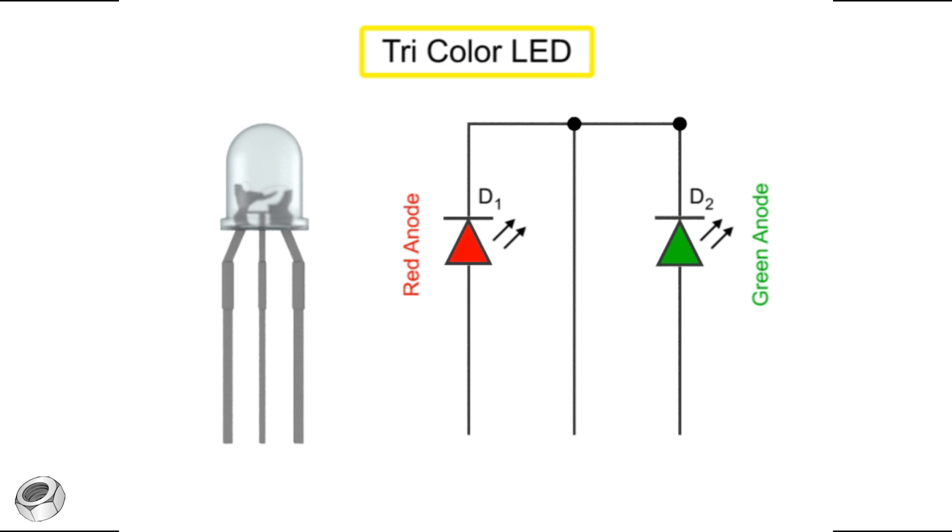In the three terminal LED, the LEDs share a grounding cathode. Like the bicolor LED, a positive voltage connected to an anode lights the LED.